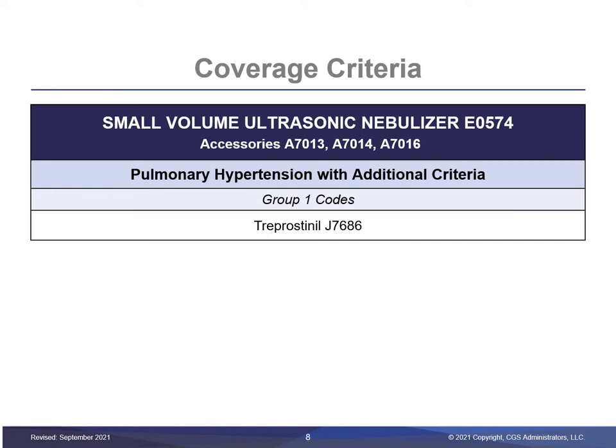A small-volume ultrasonic nebulizer may be covered if the beneficiary is diagnosed with pulmonary hypertension and requires administration of treprostinil. The additional criteria listed in the local coverage determination must be met; otherwise, claims for the nebulizer will be denied as not reasonable and necessary.